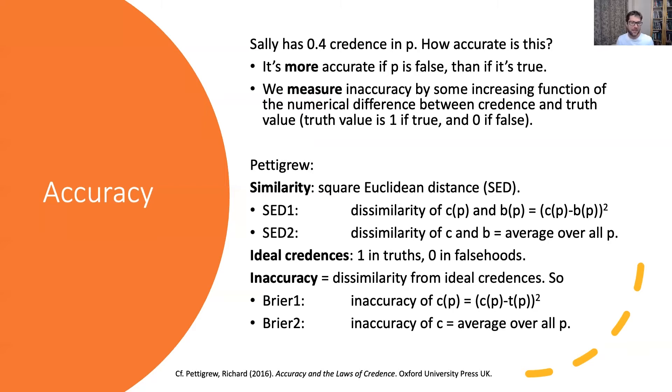So we get this characterization of inaccuracy — I've called it Brier one and Brier two. The inaccuracy of a credence in P will be the squared distance of that credence from the actual truth value. And to get that for a whole credence function you just average over all propositions. That's a pretty simple proposal for a measure of accuracy.